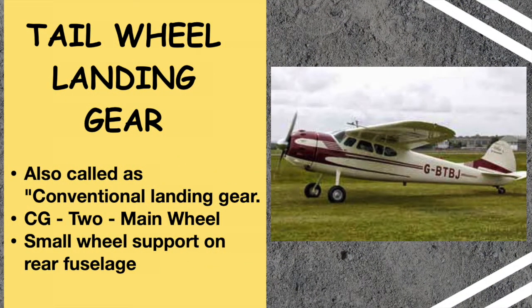While the tricycle landing gear might be the most common today, that was not always the case. For the first four decades of flight, the tail wheel undercarriage dominated aircraft design and is still commonly used on many small piston engine aircraft. The tail dragger arrangement consists of two main gear units located near the center of gravity. At the rear of the fuselage, a much smaller support is mounted, causing the plane to drag its tail — hence the name tail wheel or tail dragger gear. Typically this tail unit is a very small wheel, but it may also be a skid.